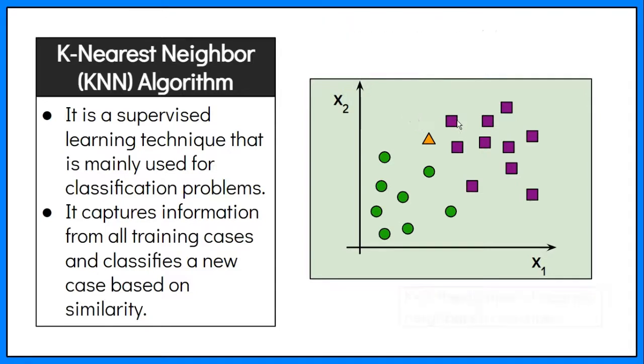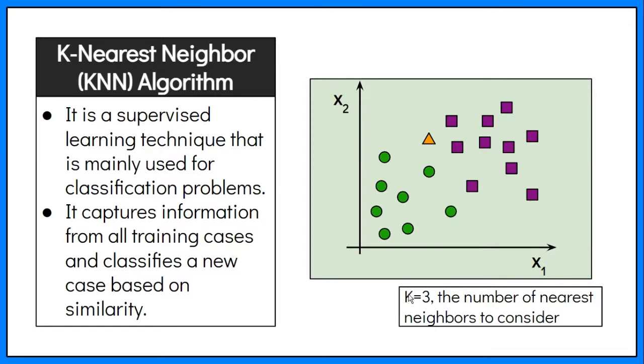The number of nearest neighbors to consider is a user-defined constant known as the K in the KNN algorithm. The new case is assigned to the class which has the most representatives within the nearest neighbors.